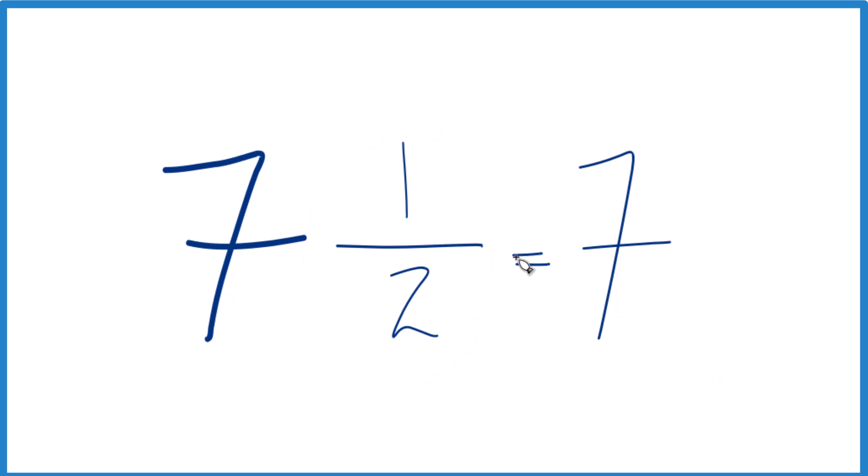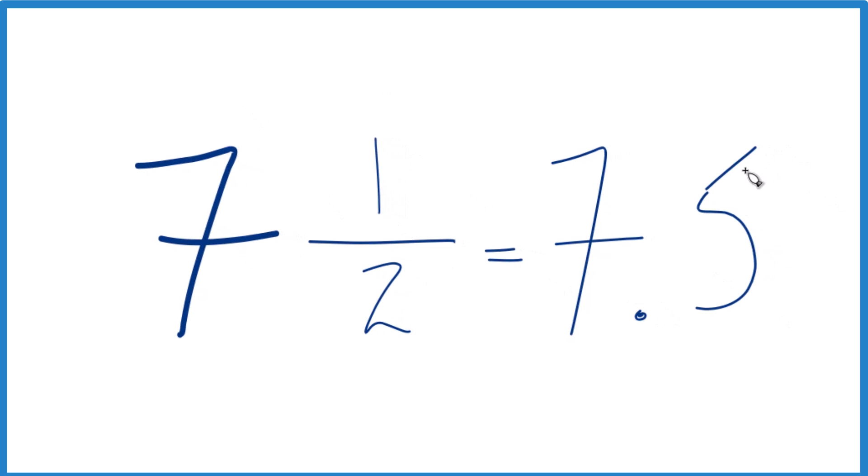And you might even know that 1/2 is the same as 0.5. And in that case, you're done. 7 1/2, the fraction, equals the decimal 7.5.